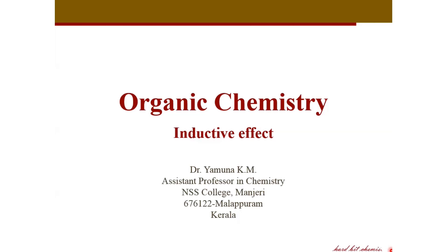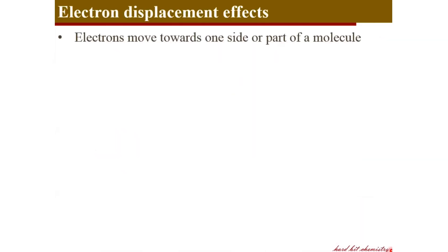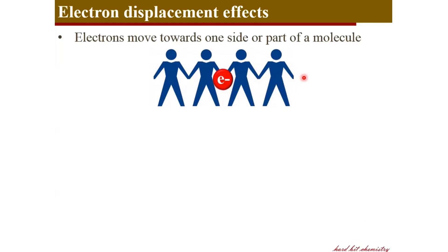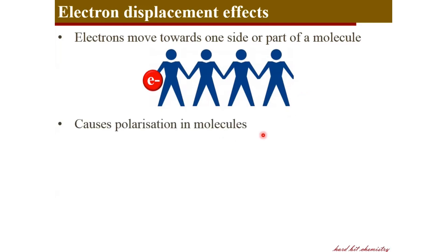Hello everyone. In this part of our organic chemistry discussion, we will go through an electron displacement effect called inductive effect. Electron displacement effects are effects in which electrons move from one part of the molecule to another, or from one atom to another atom through chemical bonds. Atoms are bonded together and electron pairs move along the chemical bond across neighboring atoms to reach an entirely different position. This causes polarization in the molecule.